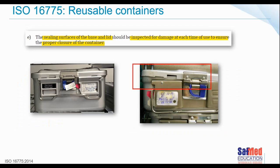The sealing surfaces of the base and the lid should be inspected for damage at each time of use to ensure proper closure. The container on the left appears well sealed. The container on the right — a picture taken of a container on a shelf in a South African setting recently — is clearly not sealed. That would be the same as having a large tear in a piece of wrap on a shelf ready for use. That container is faulty and should not be in the sterile store.